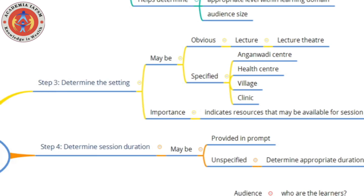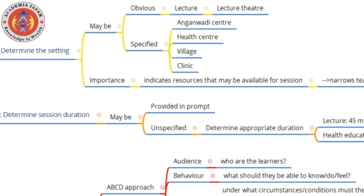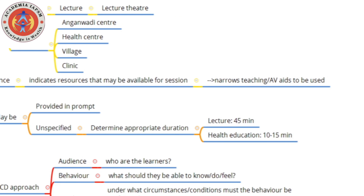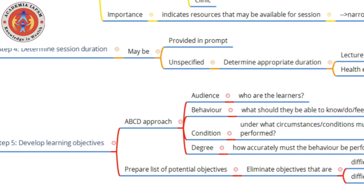Then you have to determine the duration of the session. Sometimes this is mentioned in the prompt — for example, a 15-minute session or a one-hour lecture. If it is unspecified, you have to decide an appropriate duration. A lecture of 45 minutes is reasonable, but a health education session of 45 minutes may not be appropriate because people's attention span is short and they generally don't stay for that long — unless you include role plays, dance, or music. People tend to get bored after about 10 or 15 minutes.